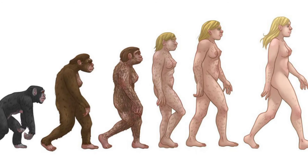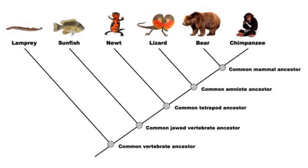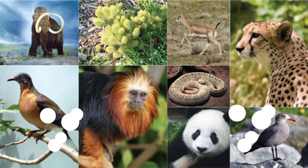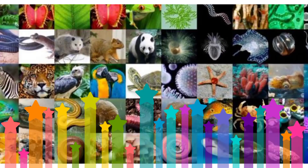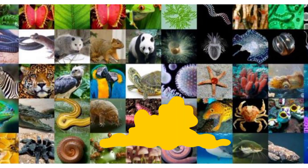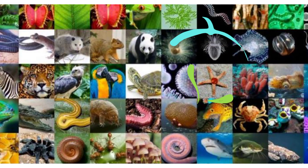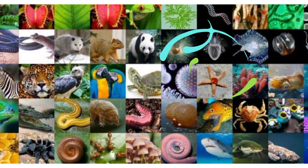The evolution and biodiversity field deals primarily with the evolutionary processes that generate, maintain, or limit organismal and genetic diversity, patterns of species biodiversity in time and space, and the biology and evolutionary relationships within specific organismal groups. Evolution and biodiversity result in increasing the total number of species found on earth, driven by the interaction between organisms and their environments over long periods of time.